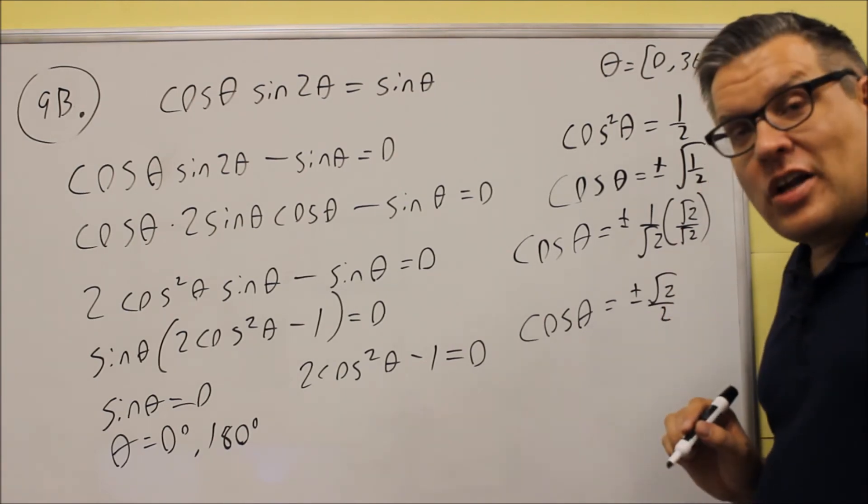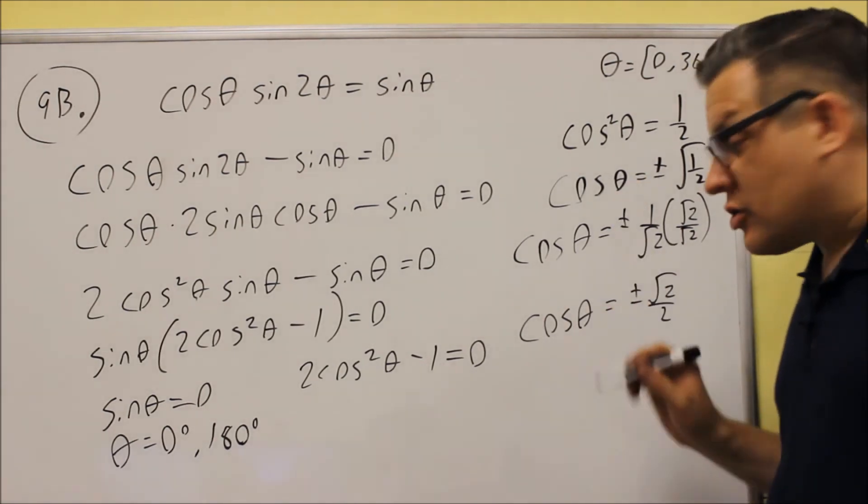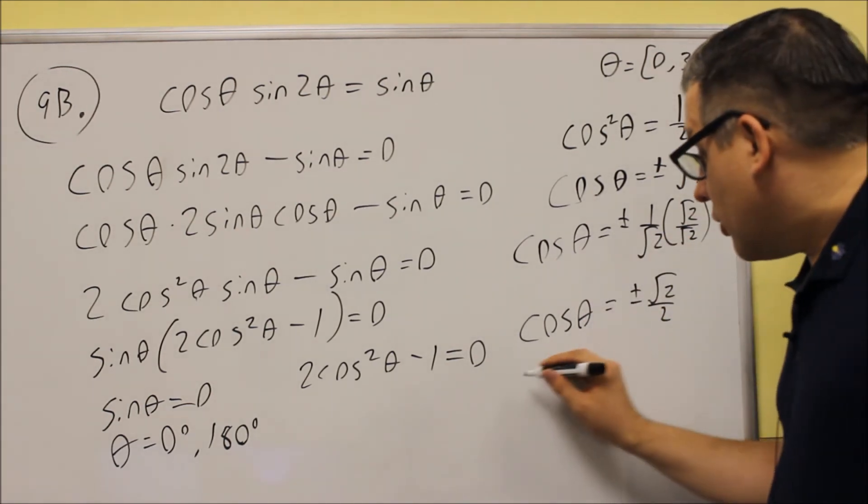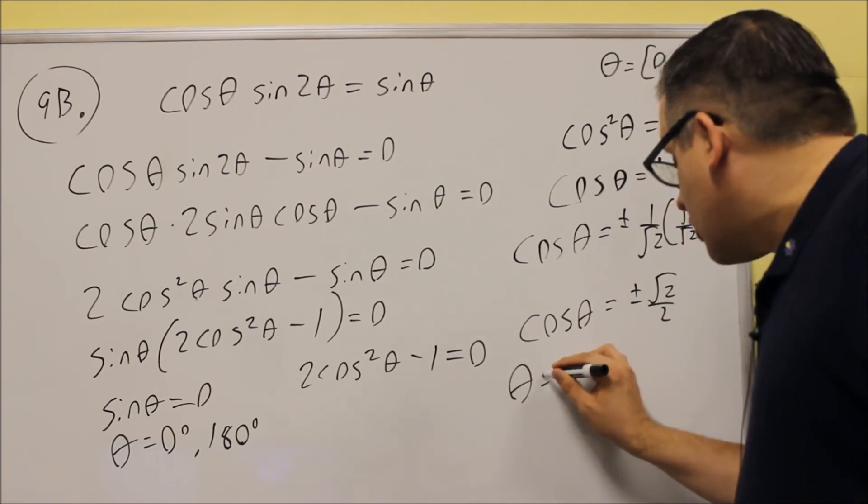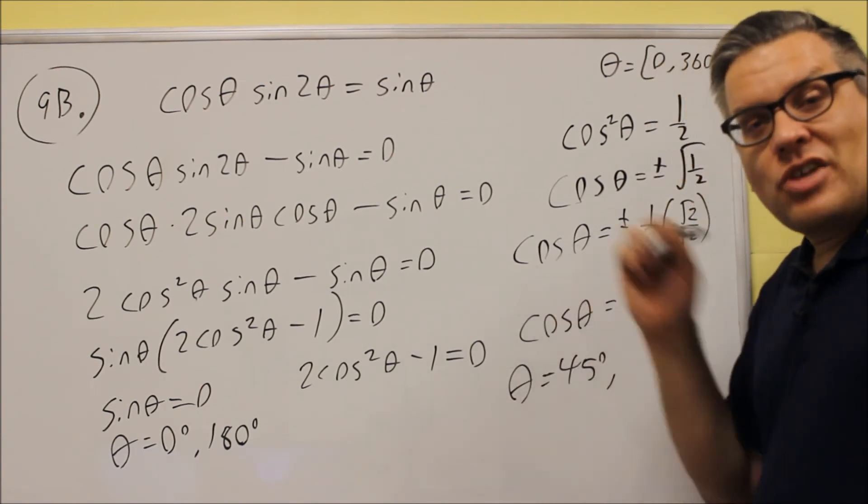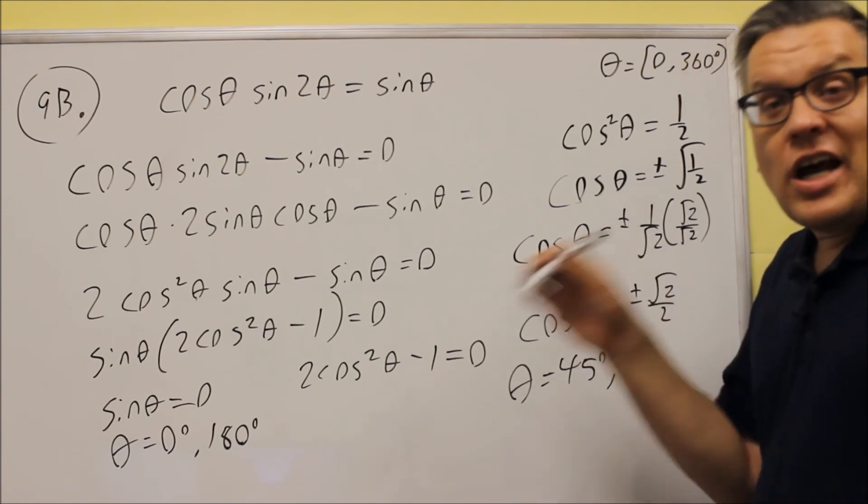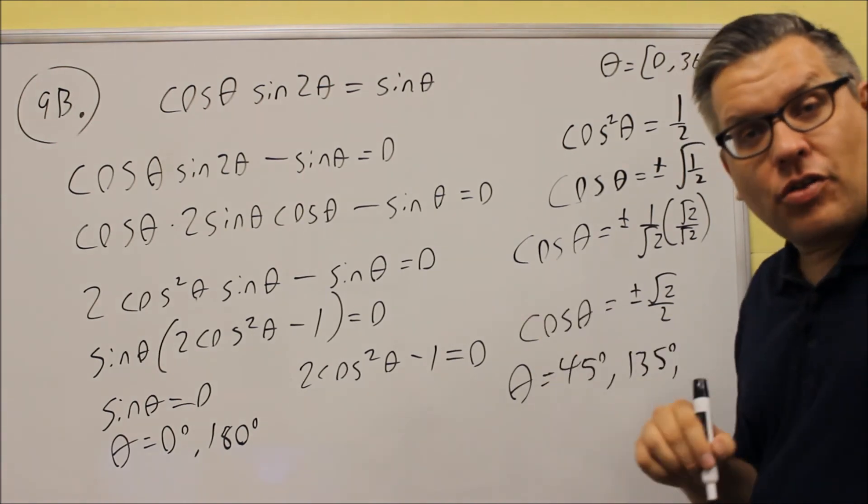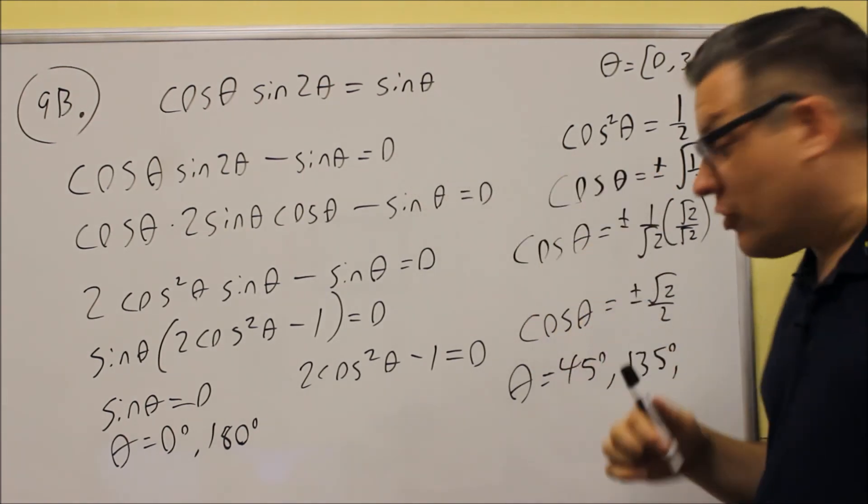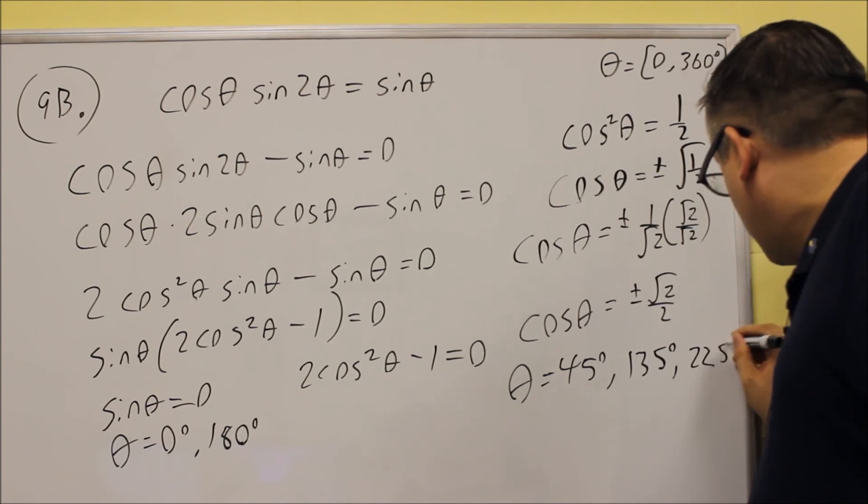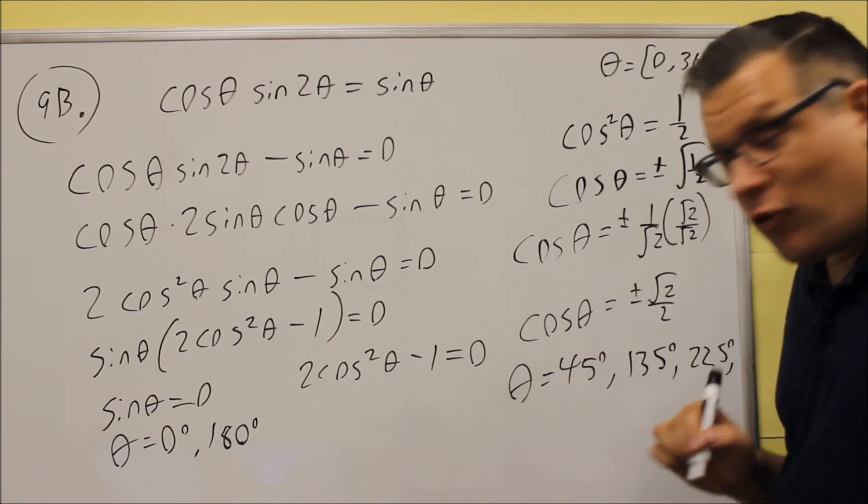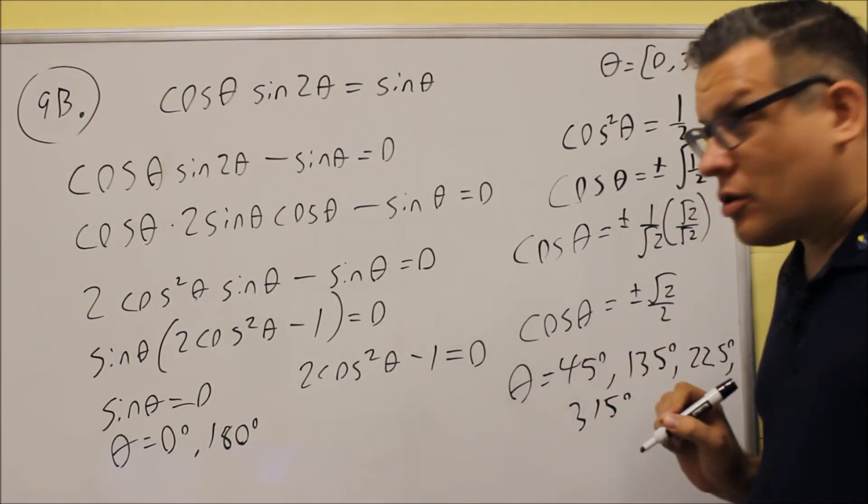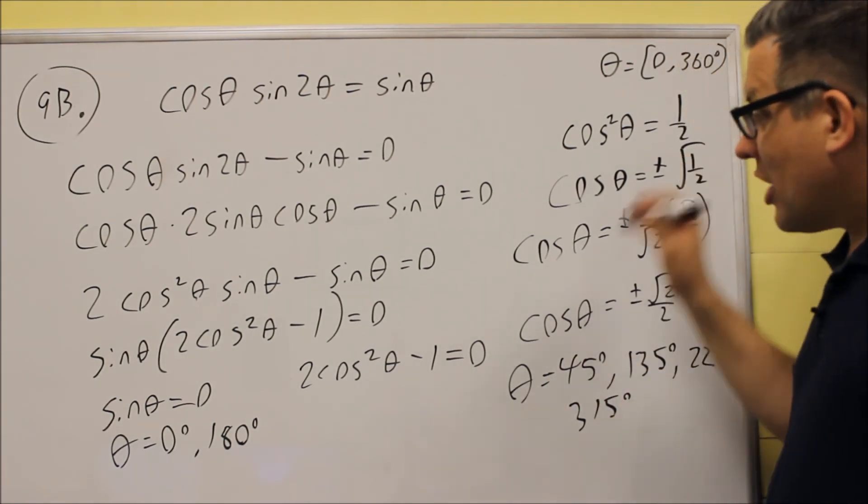So because you get plus or minus, this means you're going to get an answer in all four quadrants. So we're going to get four answers from this one. They're all using the reference angle of 45 degrees. So the first answer is 45 degrees. And in the second quadrant, if you take 90 plus the 45, you'll get 135. Down there in the third quadrant, it's like you're doing 180 plus 45, so 225. And then the last one you'll get in the fourth quadrant, that's going to be 315 degrees. So you get all four of these answers for the second equation here.